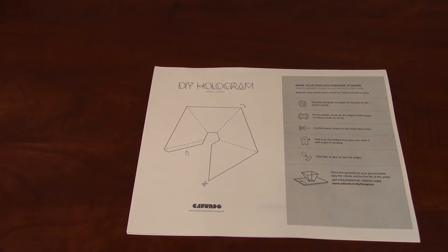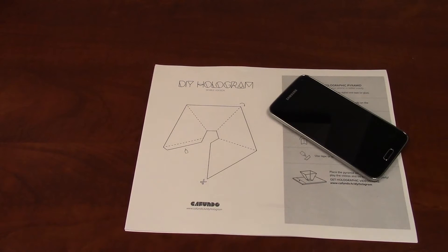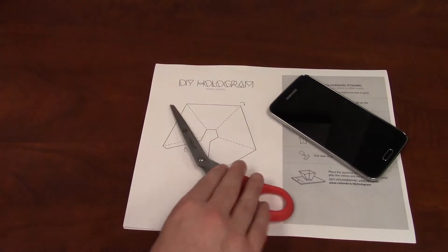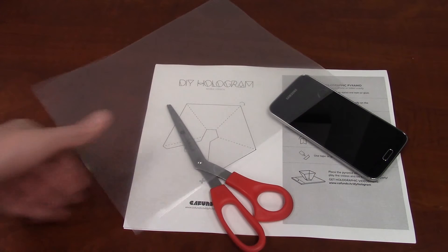So let's get to it. For this tutorial, you will need the Pyramid Hologram template, which I will provide in the description below, a smartphone, a pair of scissors, and a clear plastic report cover.